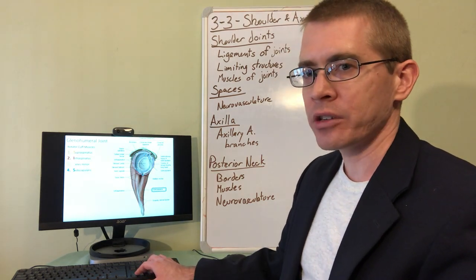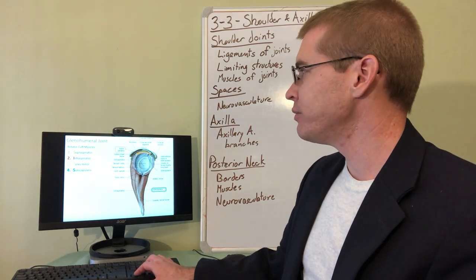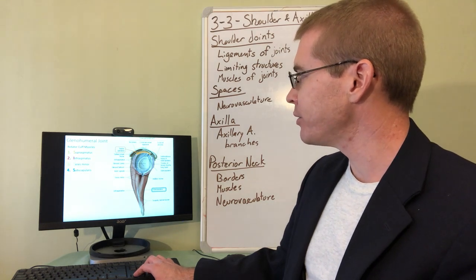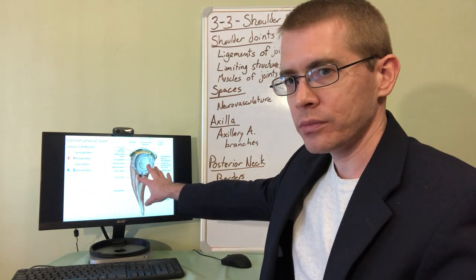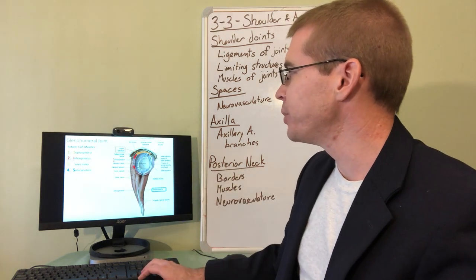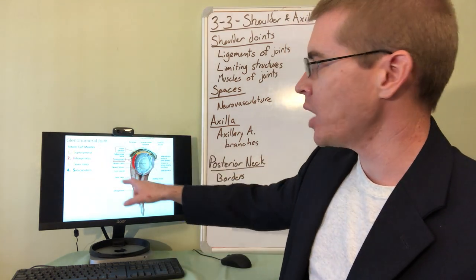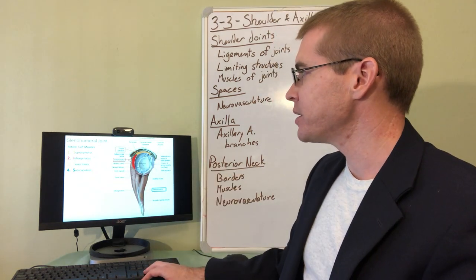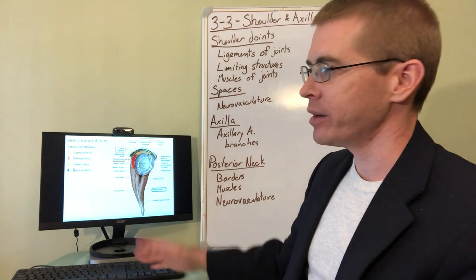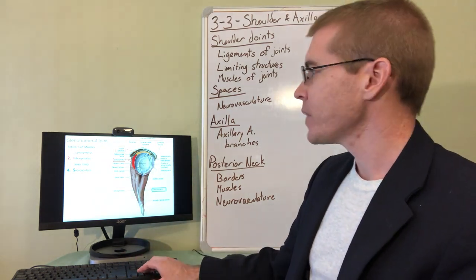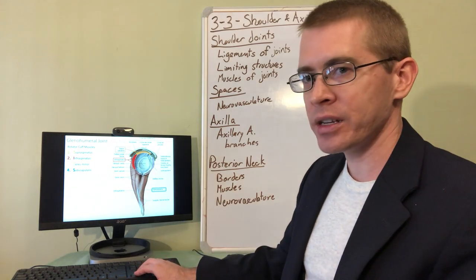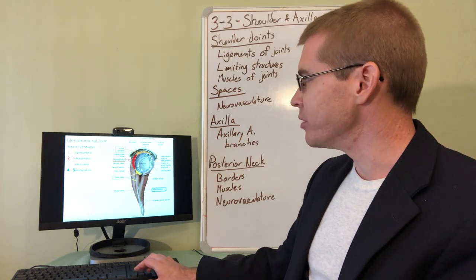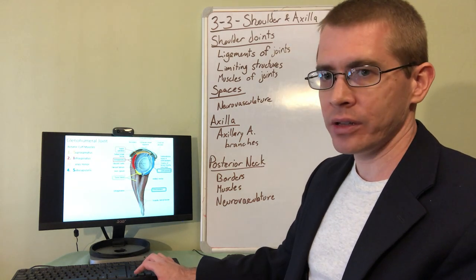So let's take a look at the rotator cuff muscles that allow the movement of this joint. So we are looking at the right shoulder. From superior, going counterclockwise, we can form the acronym SITS based on the muscles that attach around this and pass over this joint. So you can look at this: supraspinatus, infraspinatus, teres minor, and subscapularis, as you can see appearing here on the slide.